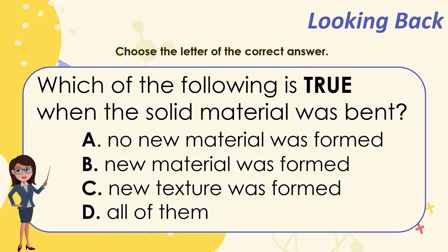Which of the following is true when the solid material was bent? A. No new material was formed, B. New material was formed, C. New texture was formed, D. All of them. The correct answer is A. No new material was formed. Congratulations!